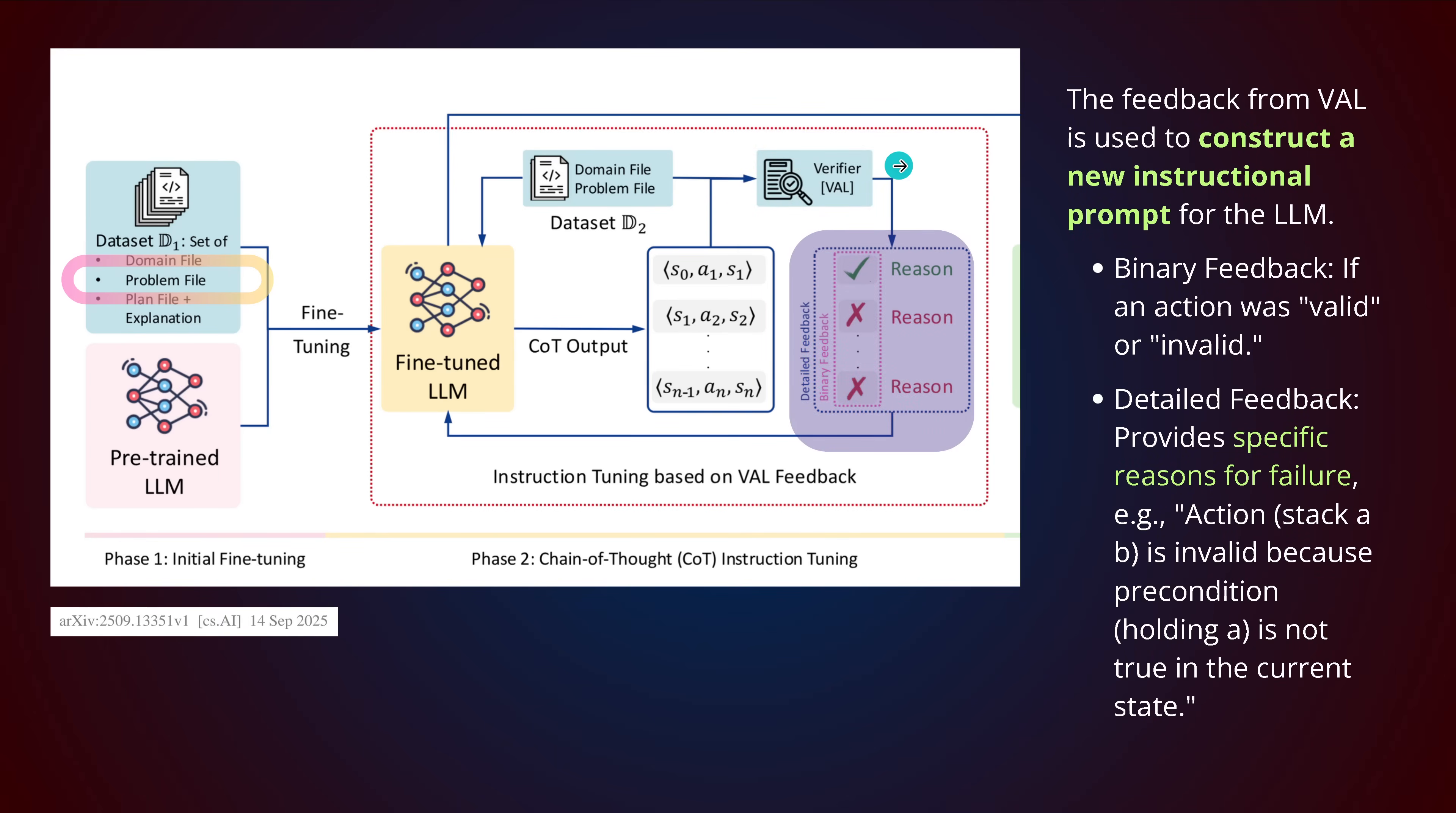We have feedback from the verifier and we build a new instructional prompt for the LLM. We have binary feedback and detailed feedback. Binary feedback is clear - was the action from the transition valid? Yes or no, given the logic verifier. But the real learning happens in the next step. You also have detailed feedback that provides specific reasoning for the failure in PDDL. For example, the action stack A is invalid because the precondition holding A is not true in the current state. You have a logical argument that tells you exactly why it is wrong, what went wrong.